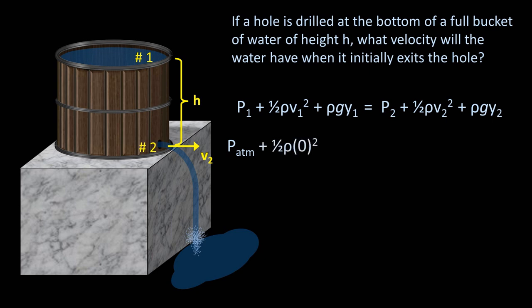The value of y1 is the height of point 1 above some arbitrary level. We can make that arbitrary level anything, but let's make it the top of the marble block. So y1 becomes h.